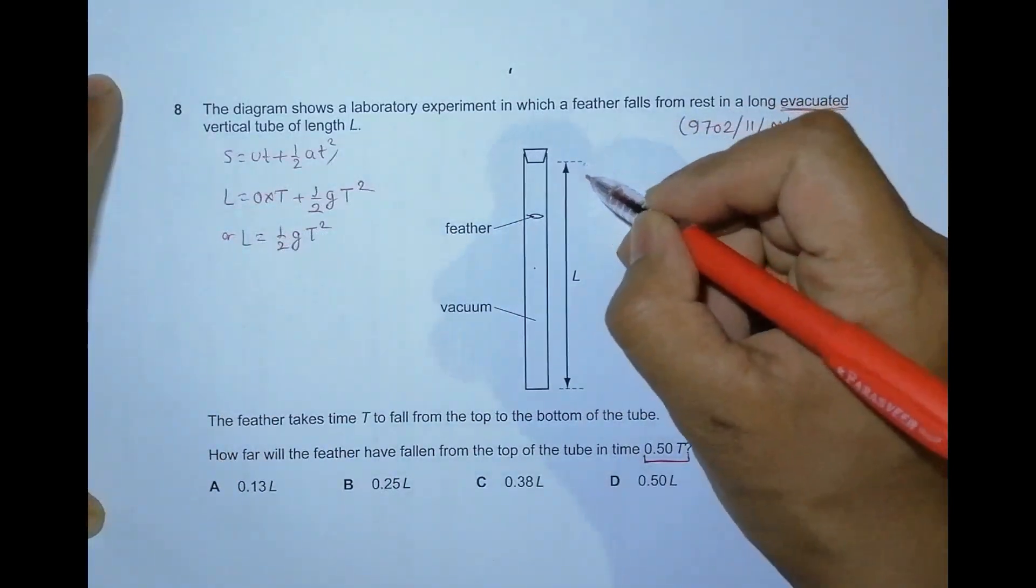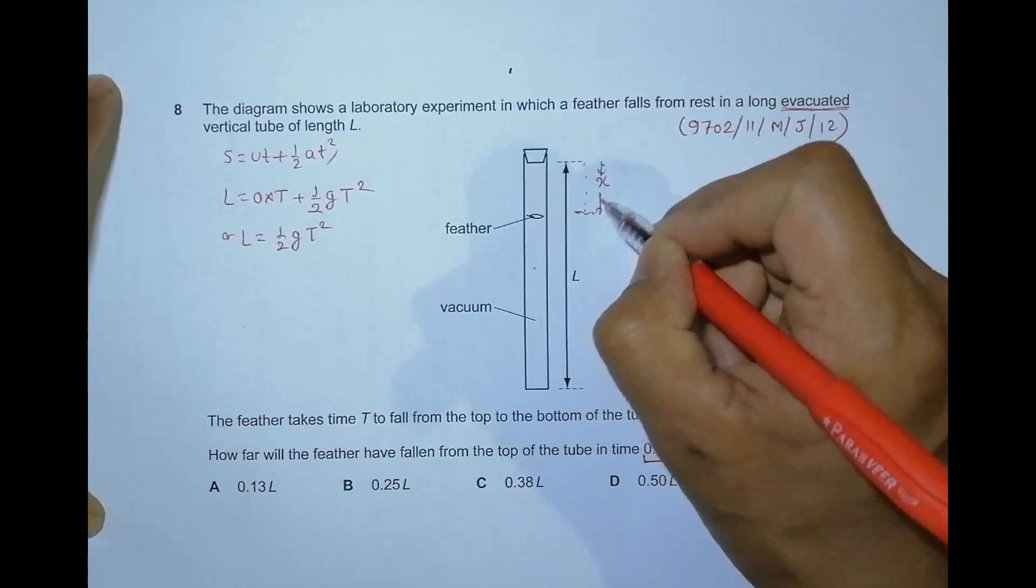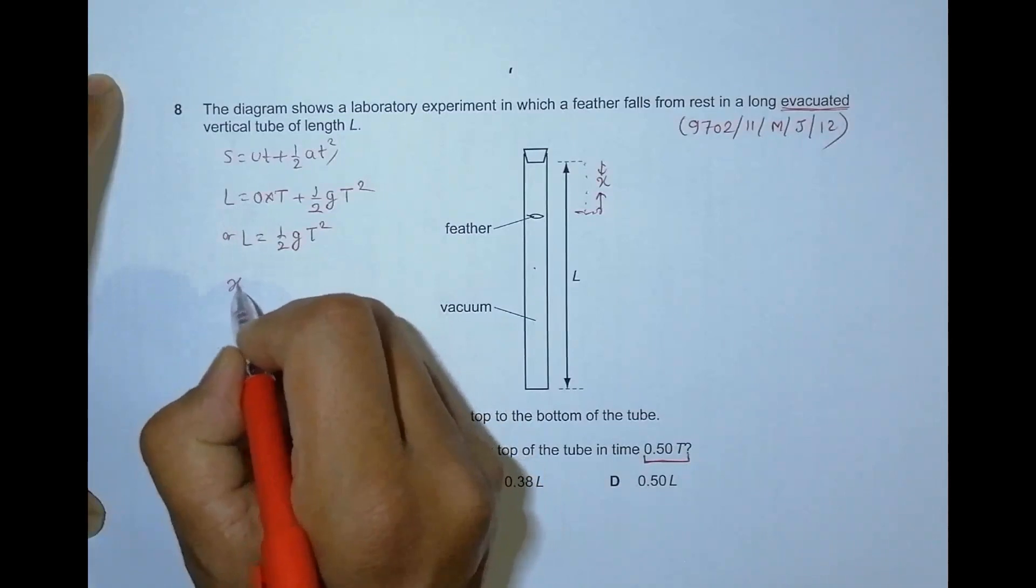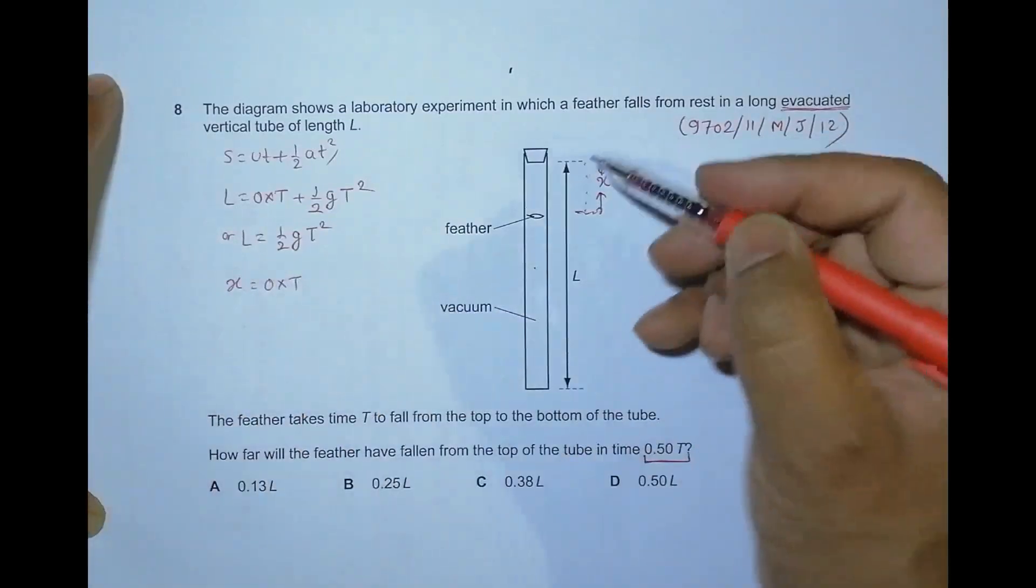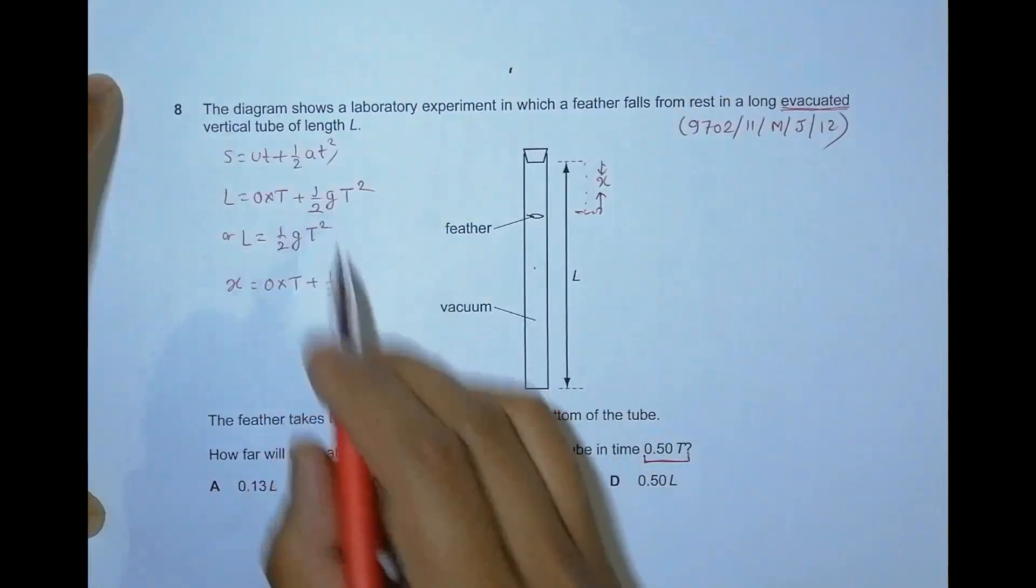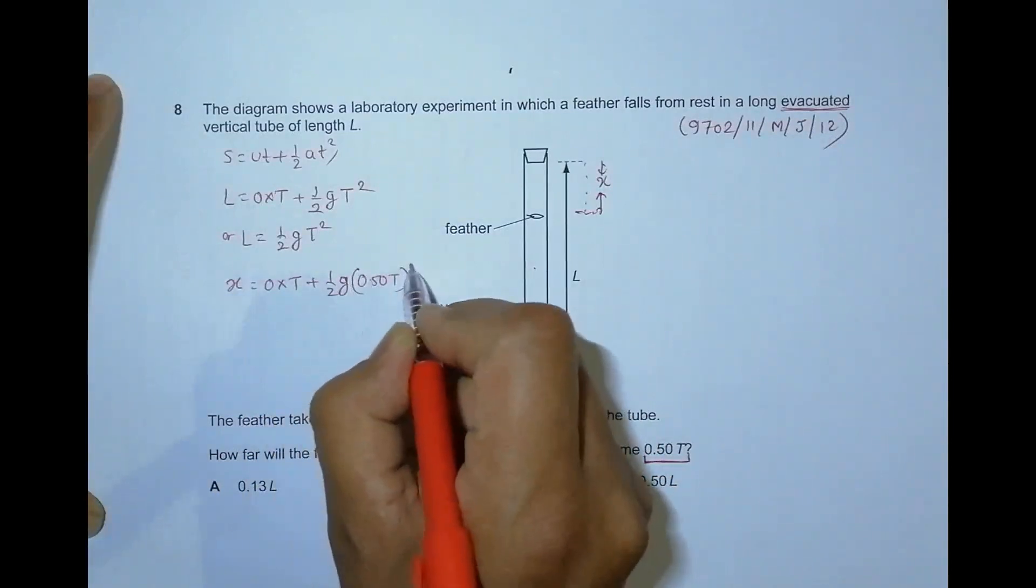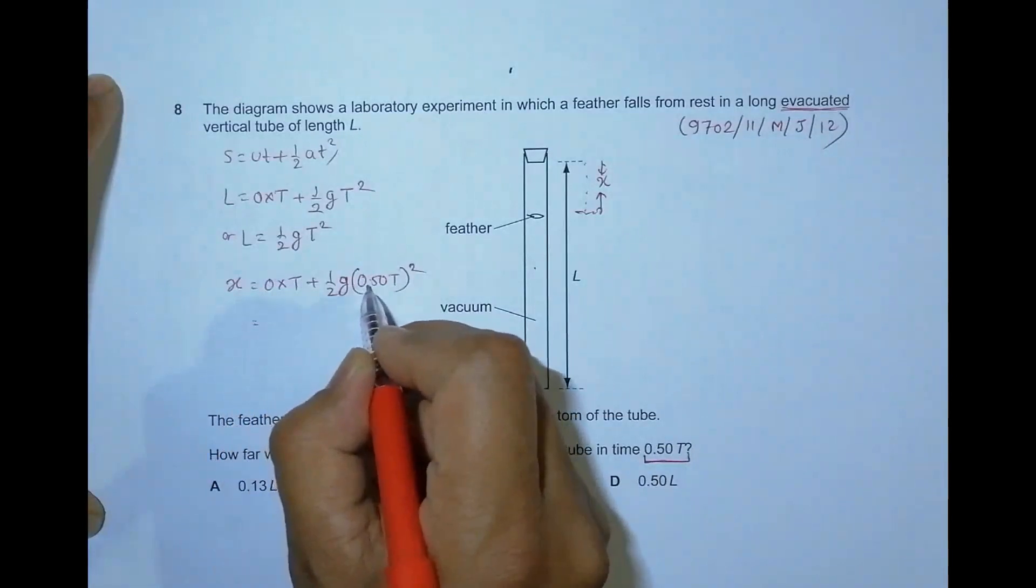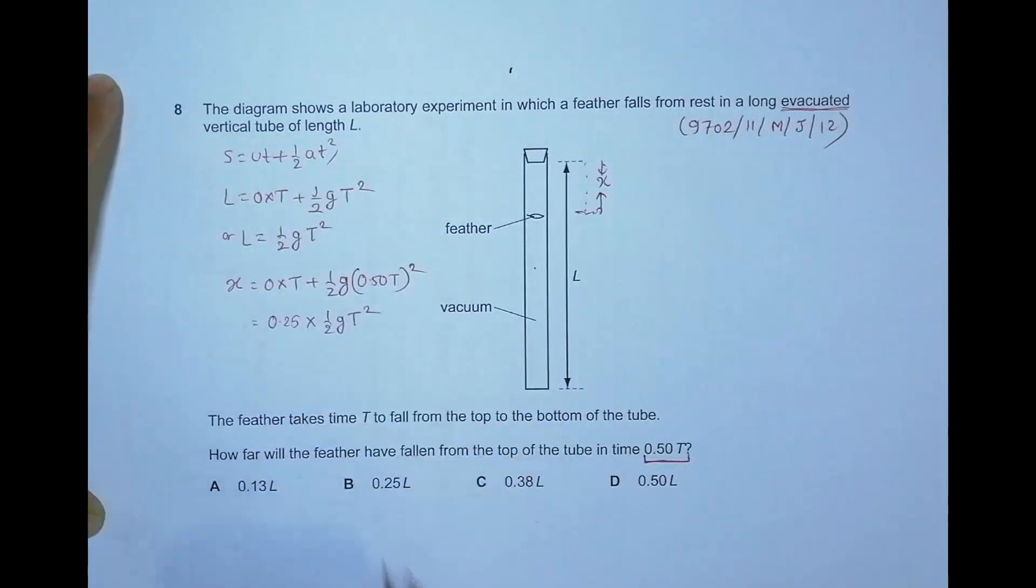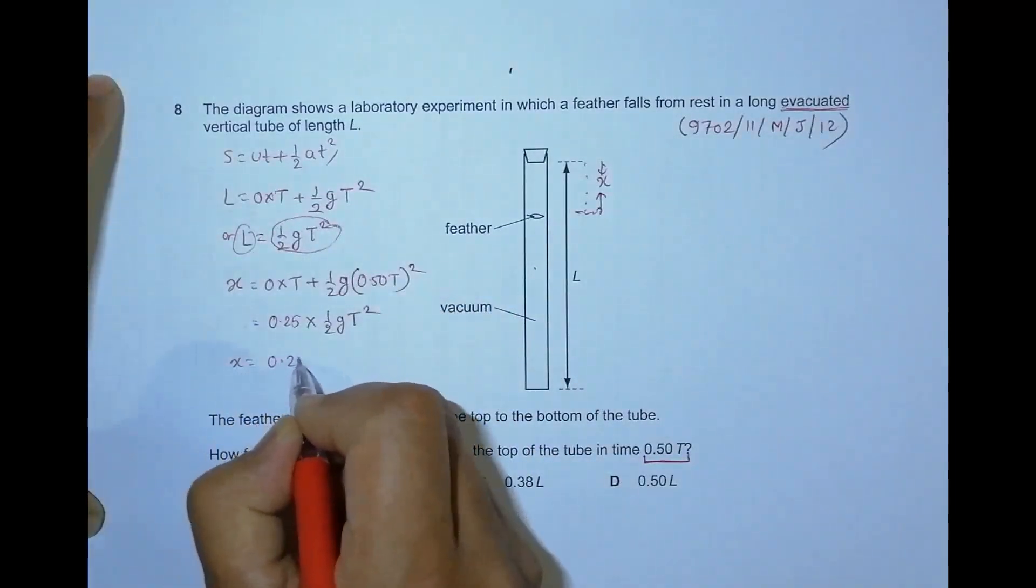Now let's say that it has fallen a certain distance x in the time given as 0.50t. In such case we have x = 0 × t + (1/2)g(0.50t)². Since the initial velocity is 0, this equals 0.25 × (1/2)gt². Since (1/2)gt² is equal to L, I must have x = 0.25L.